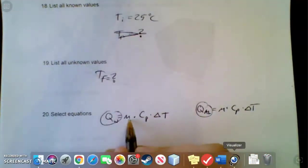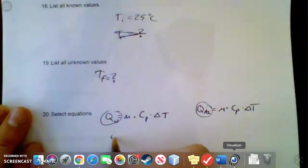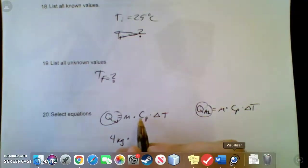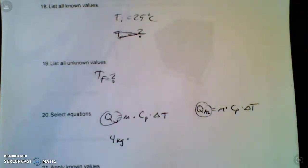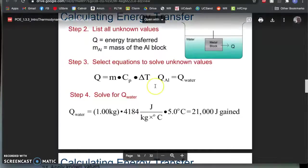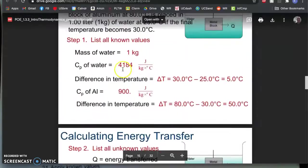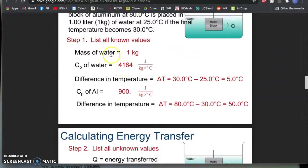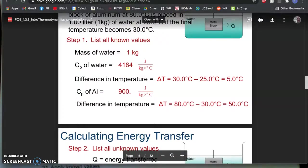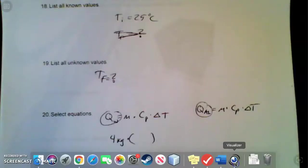Yeah, basically we're gonna have water and aluminum, but you can just set these two things equal. So really you need mass of the water, which you know. It says there's four kilograms of water times specific heat capacity of water.